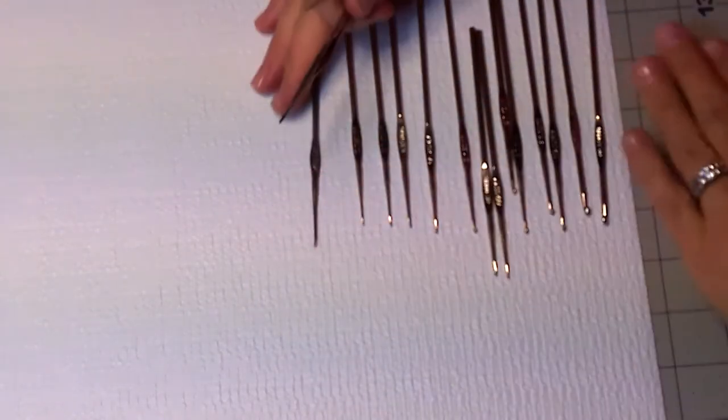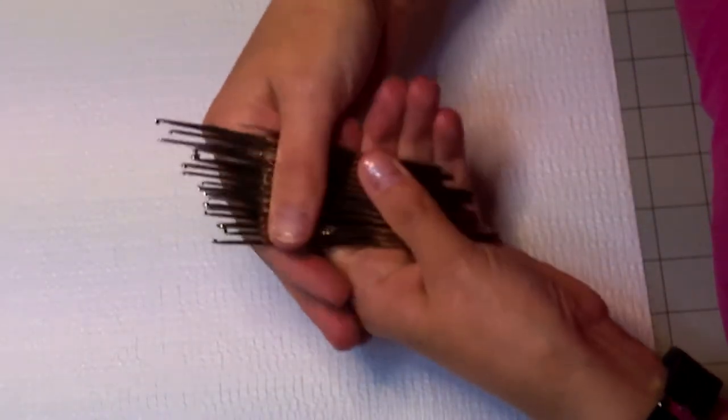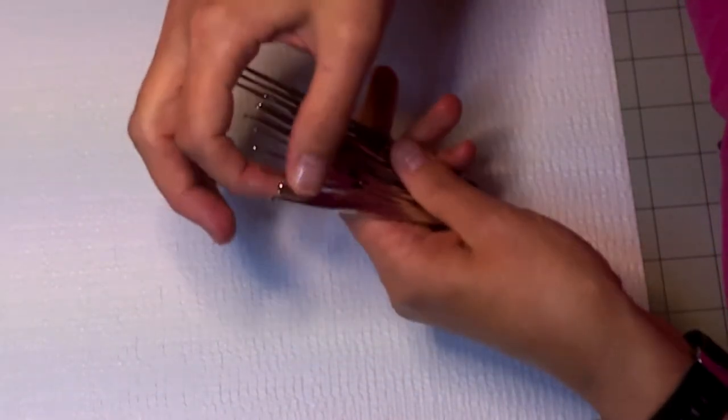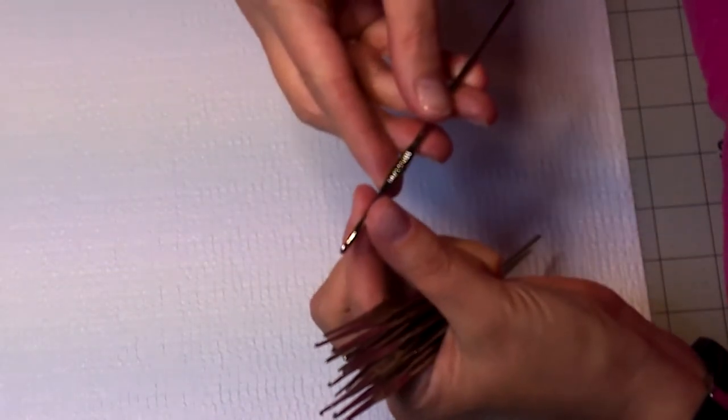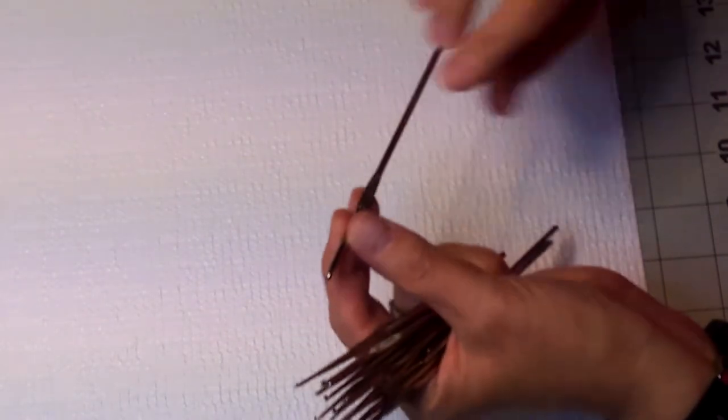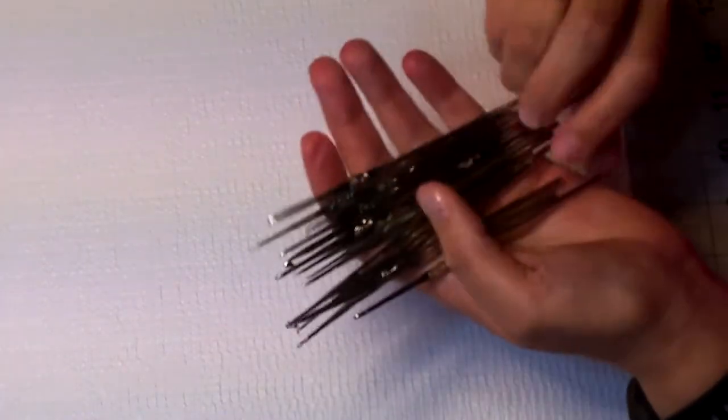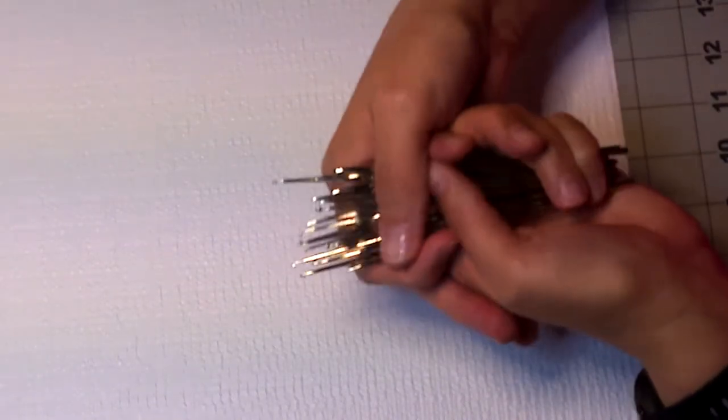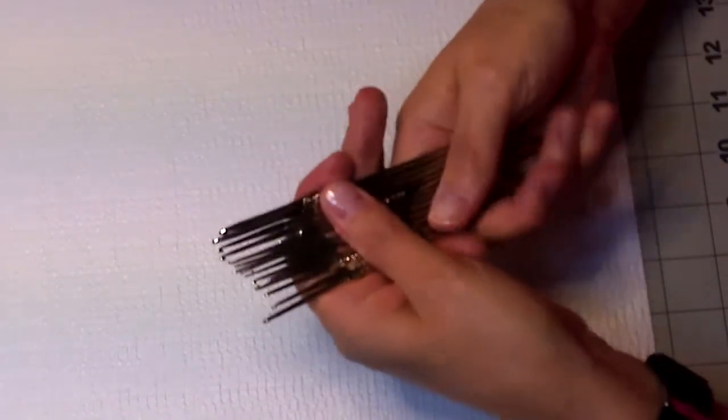So these are your stainless steel hooks, and these are typically used for thread crochet. The larger of this one, the 0-0 which is a 3.5 millimeter, you can use sock yarn, you can use baby yarn which are really fine yarns. But typically they're used for thread crochet, which you would make doilies, jewelry, things of that nature.